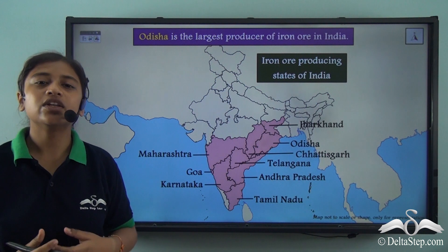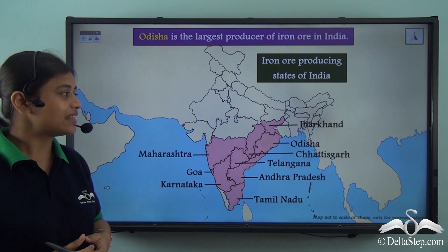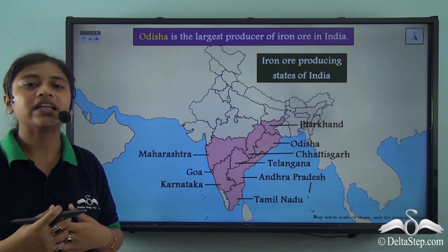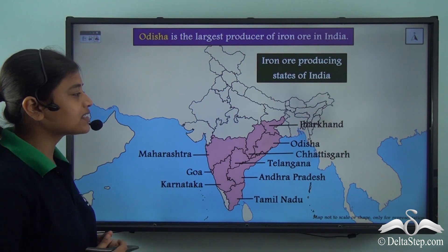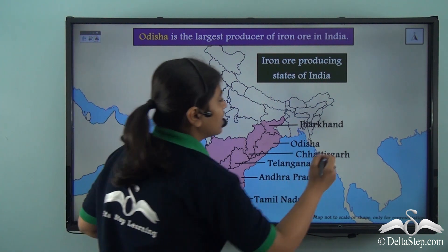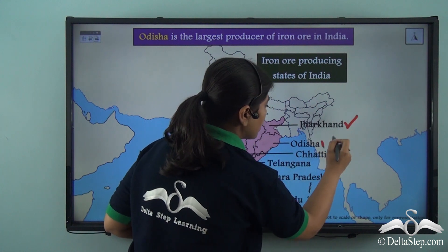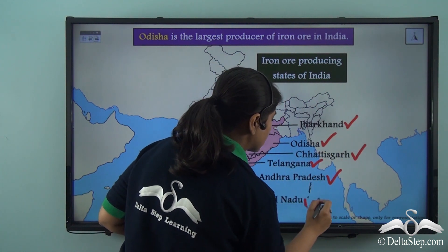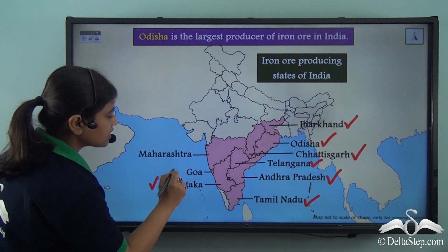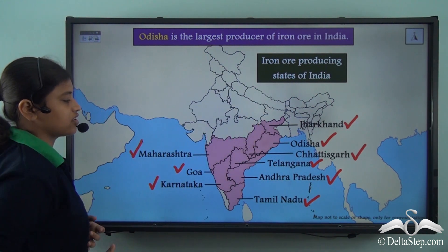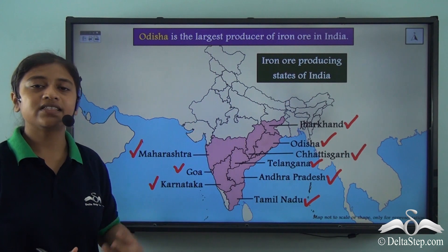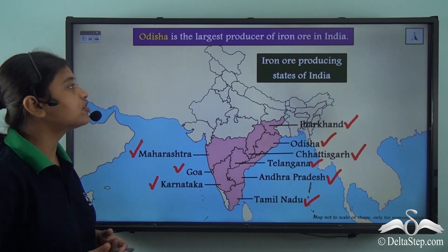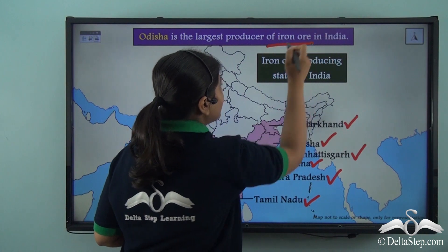So let us take a look at the distribution of iron ore in India. These are the leading producers of iron ore in India: Jharkhand, Odisha, Chhattisgarh, Telangana, Andhra Pradesh, Tamil Nadu, Karnataka, Goa and Maharashtra. Out of all these states, Odisha is the largest producer of iron ore in India.